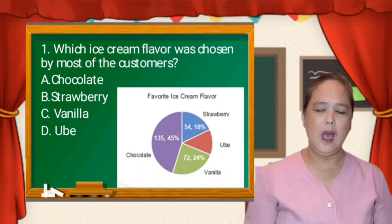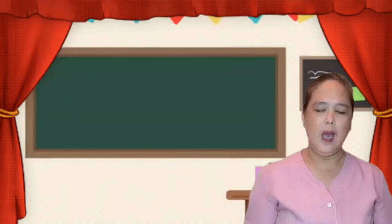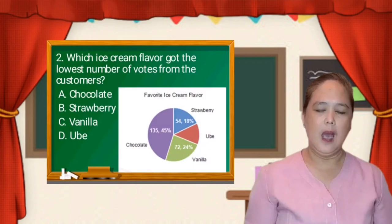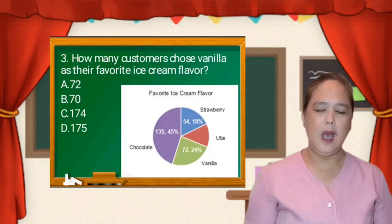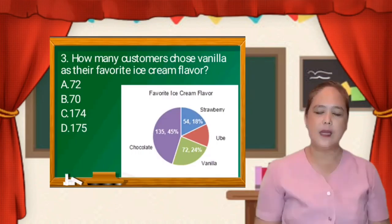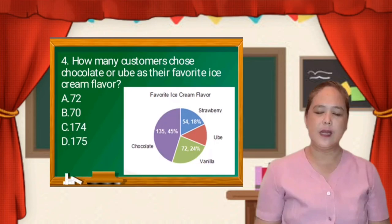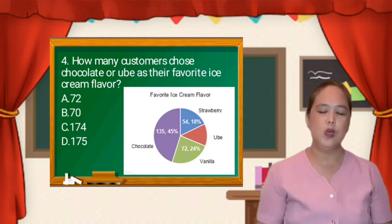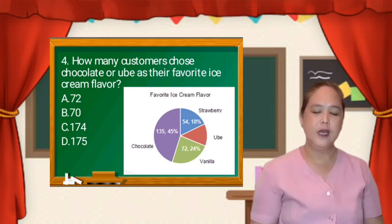Let us answer number 1: which ice cream flavor was chosen by most of the customers? A) chocolate, B) strawberry, C) vanilla, D) ube. For number 2: which ice cream flavor got the lowest number of votes? A) chocolate, B) strawberry, C) vanilla, D) ube. For number 3: how many customers chose vanilla as their favorite? A) 72, B) 70, C) 174, D) 175. For number 4: how many customers chose chocolate or ube as their favorite? A) 72, B) 70, C) 174, D) 175.